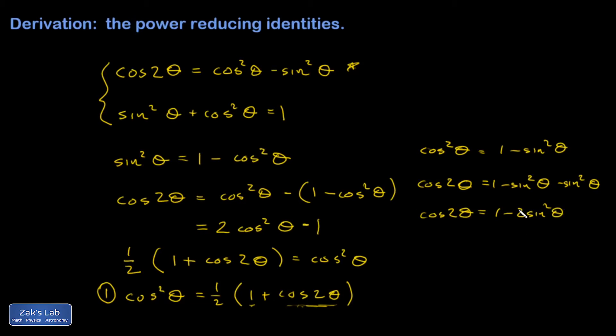I want to solve for sine squared θ. The easiest way to do this is to add that 2 sine squared θ term to both sides and subtract this cosine 2θ from the left-hand side. I arrive at another very useful identity: sine squared θ is one half times one minus cosine 2θ.